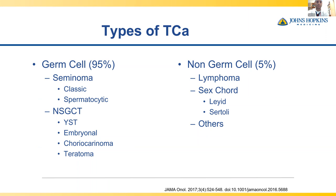The types of testis cancer are either germ cell tumor or non-germ cell tumor. The most common types are the seminomatous and non-seminomatous germ cell tumors. Non-germ cell tumors are very rare — about 5% — and include lymphomas, sex cord malignancies such as Leydig cells, Sertoli cells, and other rare variants like sarcomatoids and peritesticular masses.